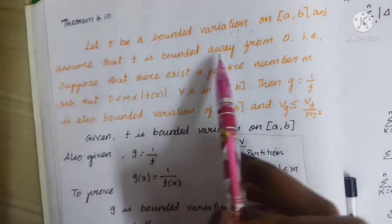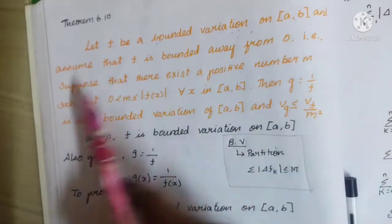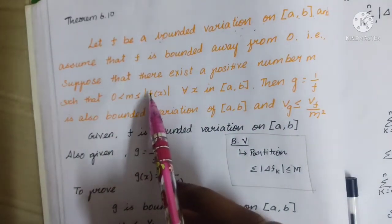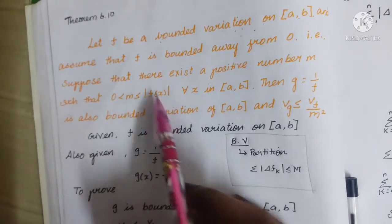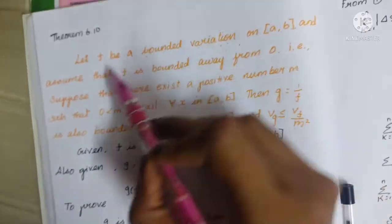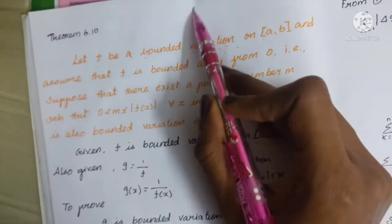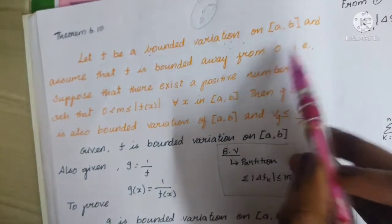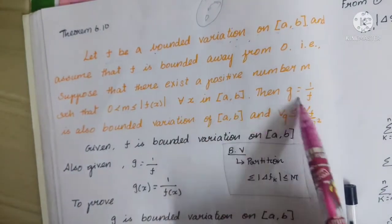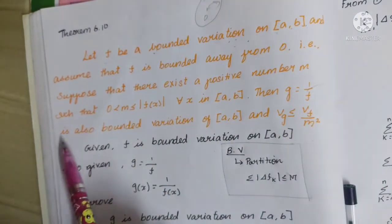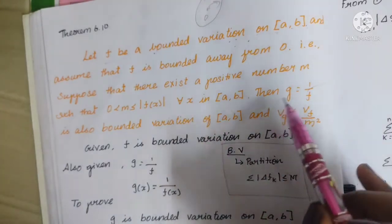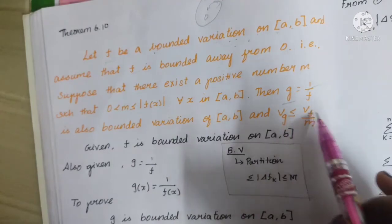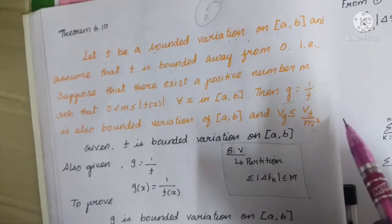Assume that f is bounded away from zero. That is, suppose there exists a positive number m such that 0 < m ≤ f(x). Since f is bounded variation, f is bounded. We will prove that g = 1/f is also of bounded variation, and that Vg ≤ Vf / m².